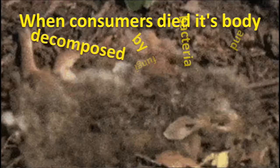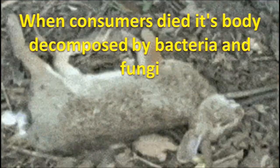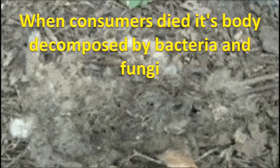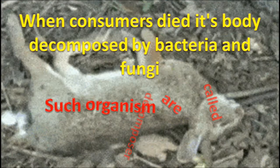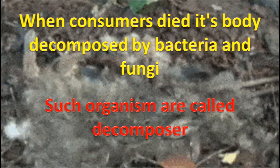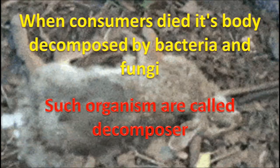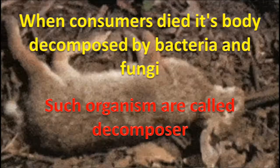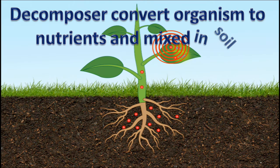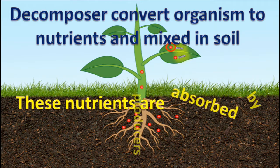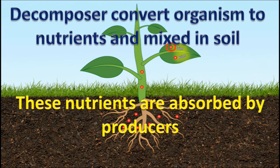When consumers die, their bodies are decomposed by bacteria and fungi, or simply by microorganisms. These microorganisms are called decomposers. They decompose the body into simple nutrients which get mixed into the soil, and these nutrients are then absorbed by producers to produce food by photosynthesis.